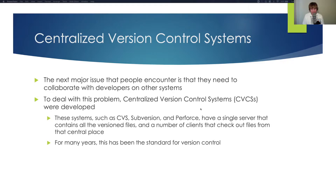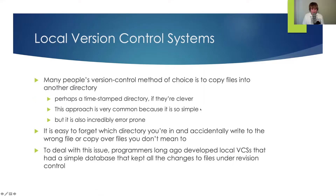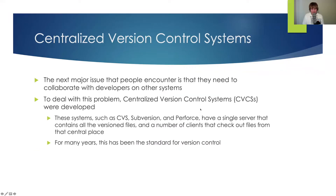We had a VCS — you just add a C in front of it: CVCS. These CVCS systems, like Subversion and Perforce, have a single server that contains all the version files and a number of clients that check out files from that central place. For many years, this has been the standard for version control.